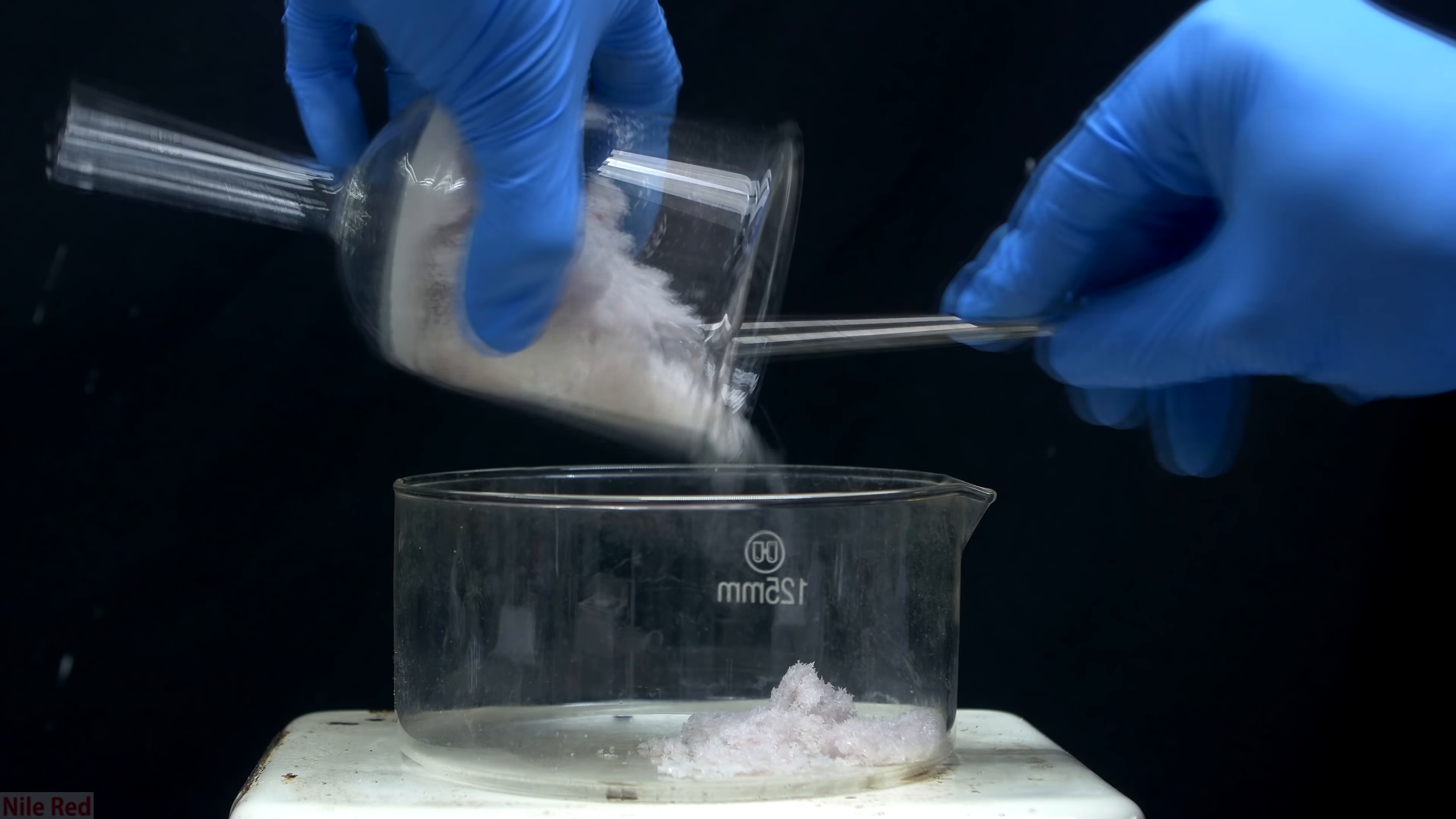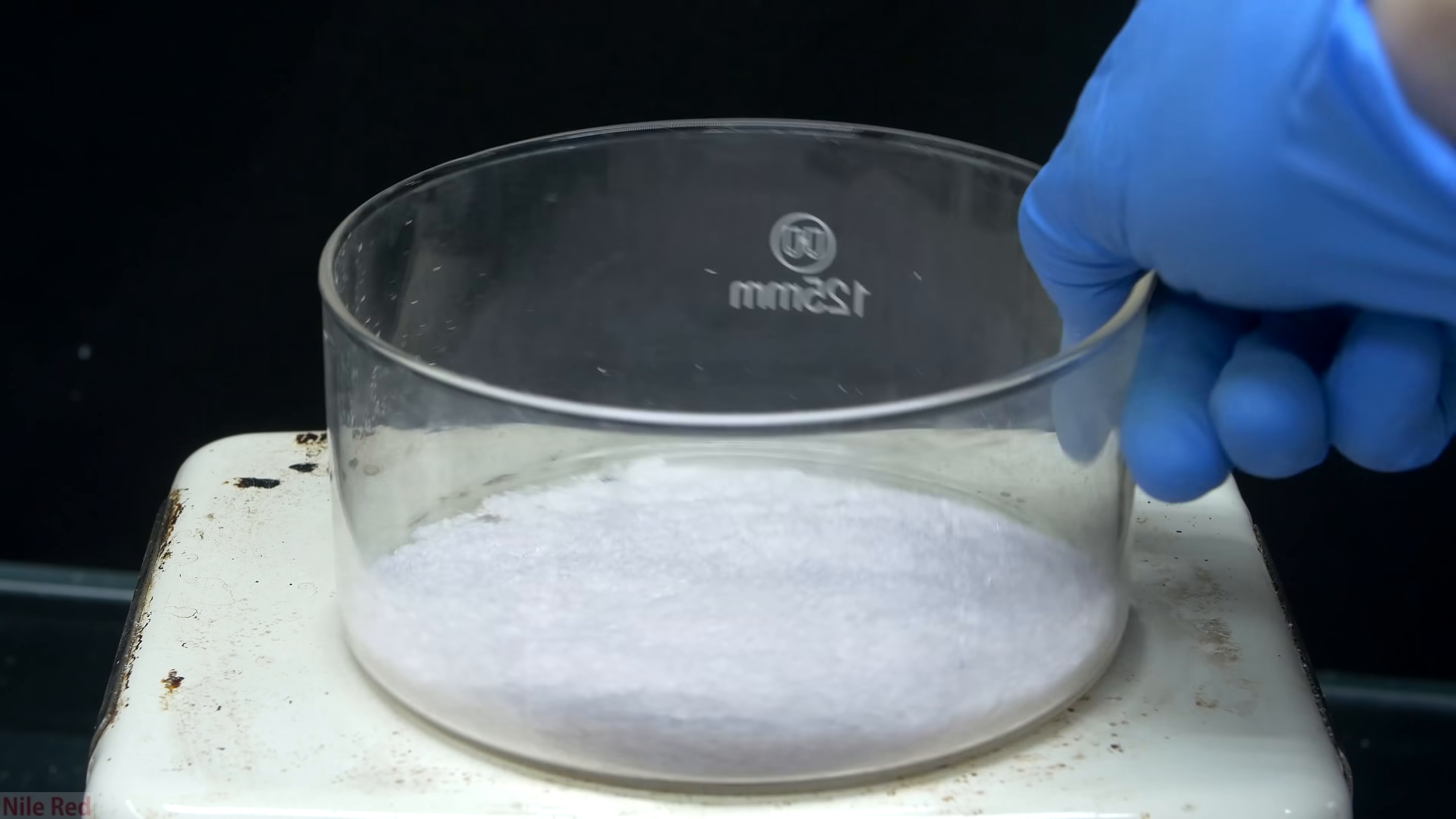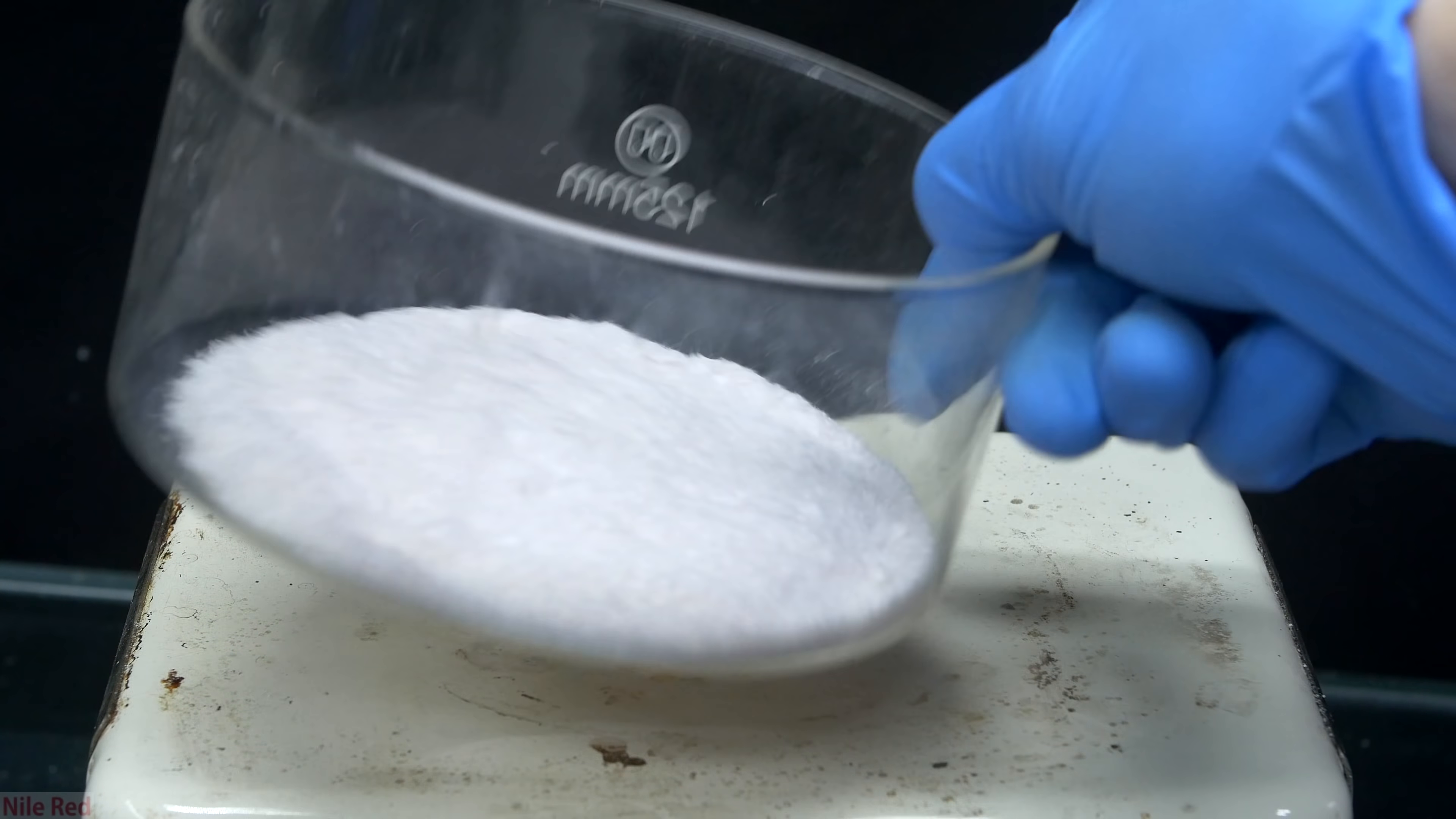The oxalic acid should be relatively toluene free at this point, but to fully get rid of most of the DCM, I transfer it to a crystallizing dish, and I let it evaporate. I leave it out for several minutes, which is just enough time for the majority of the DCM to go away, and I don't leave it out for too long, otherwise it'll start absorbing moisture from the air.